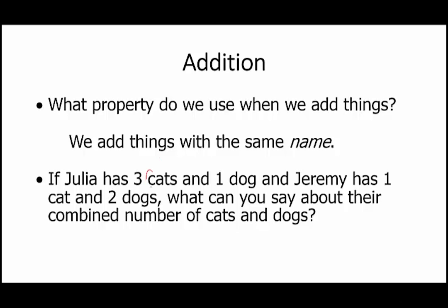Well, let's use C for cats and D for dogs. So Julia has three cats, let's say 3C, and one dog, let's write 1D, and we want to combine them. So combine means we have to add them. We're going to add the number of pets that Julia has with the dogs and cats that Jeremy has. Jeremy has one cat, so we'll say 1C, and two dogs, plus 2D.